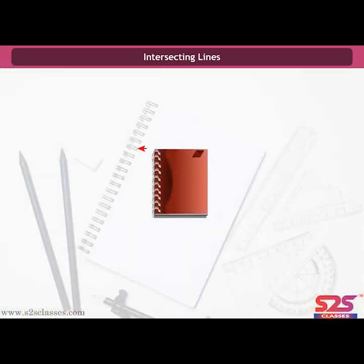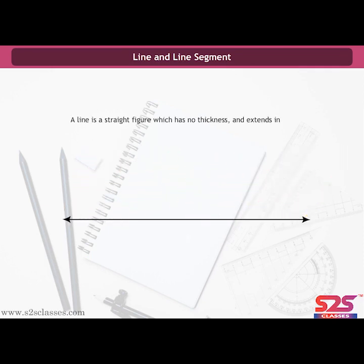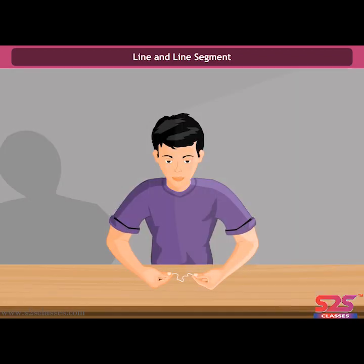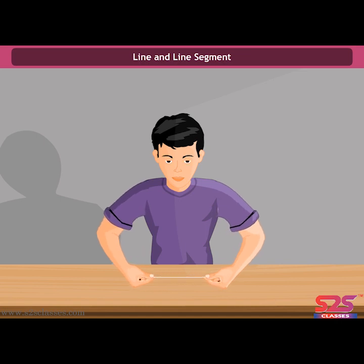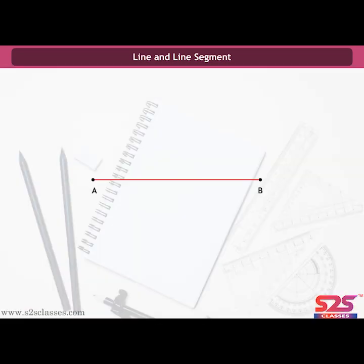Also, two adjacent edges of a notebook is an example of intersecting lines. A line is a straight figure which has no thickness and extends in both directions endlessly or infinitely. Take a thin thread, hold its two ends and stretch it such that there is no slack — it represents a line segment. The ends held by the hands are the endpoints of the line segment. So a line segment is a part of a line that has two endpoints; it is the shortest distance between the two points.